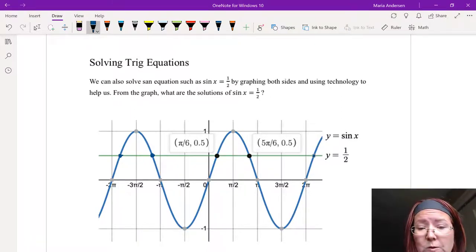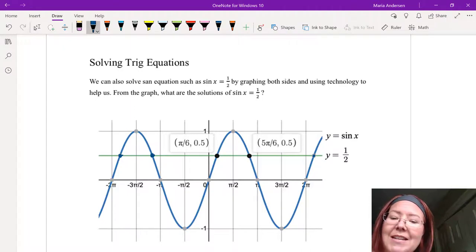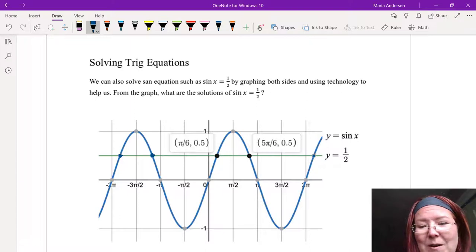Just as an example, two of those places are pi over 6 comma 0.5 and at 5 pi over 6 comma 0.5. That's actually at the special angle values pi over 6 and 5 pi over 6, and then those would repeat every pi units because the period of sine is pi.